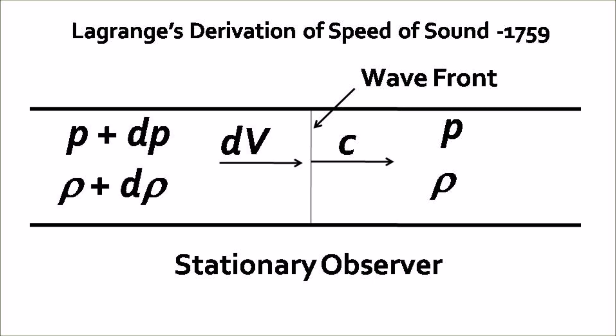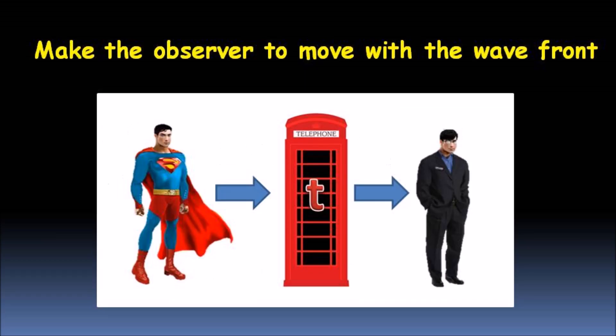Just behind the moving wavefront, pressure and densities are p plus dp and rho plus d rho. The medium behind the wavefront attains a small speed dv. At this point, it is very difficult to analyze this problem. But Lagrange brought the revolutionary idea of transforming the reference frame. And observer is made to move with the wavefront.